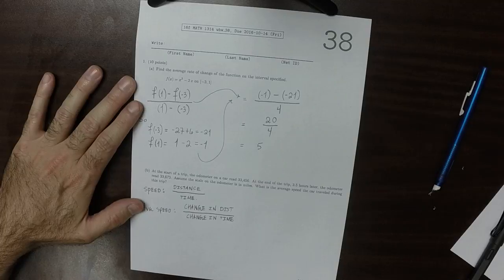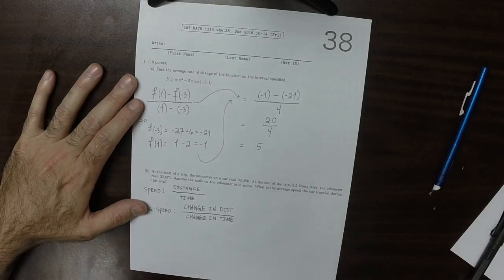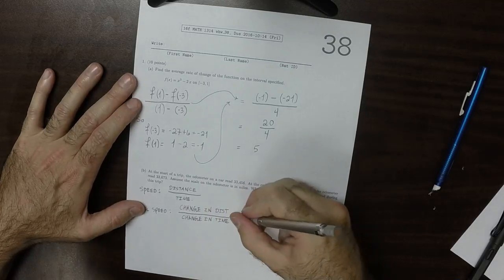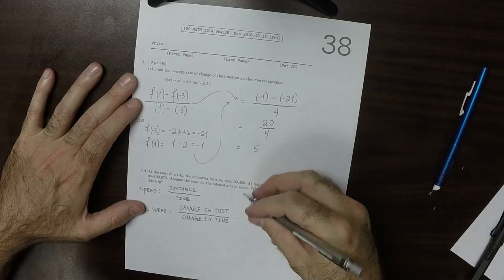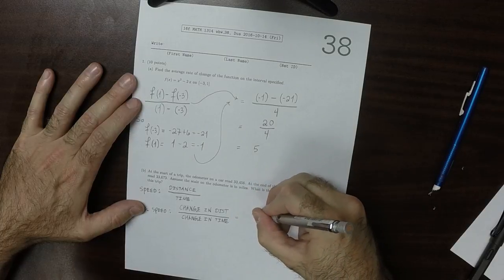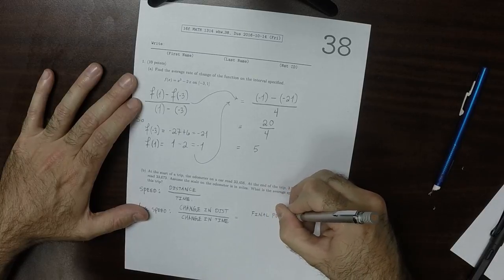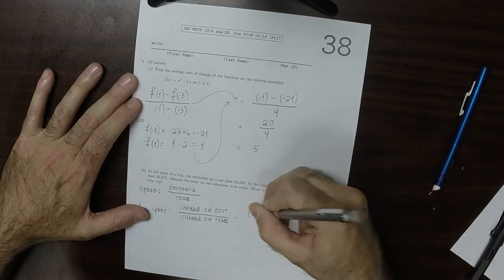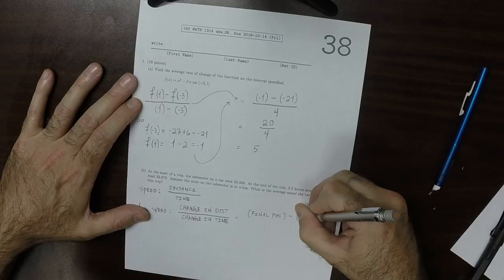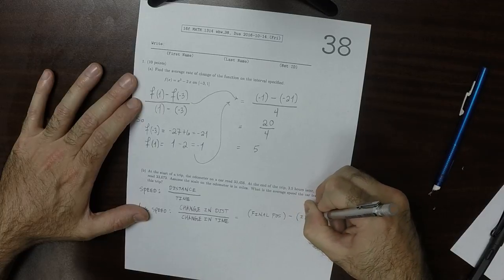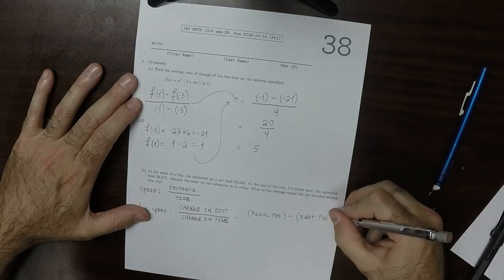So then the change in the distance. This will be the final position minus the initial position.